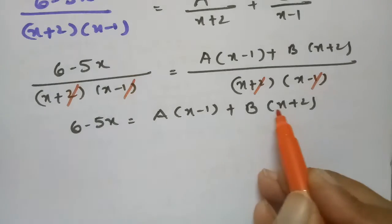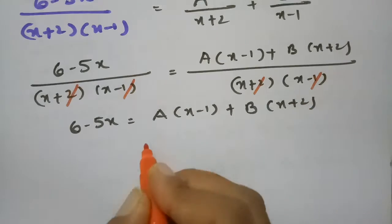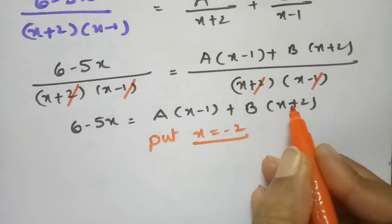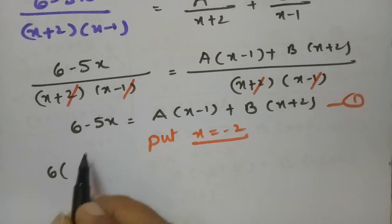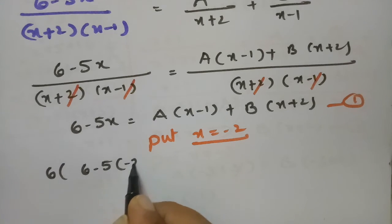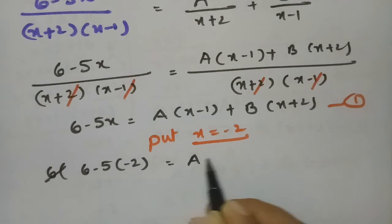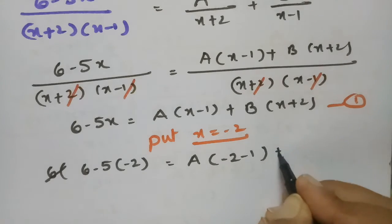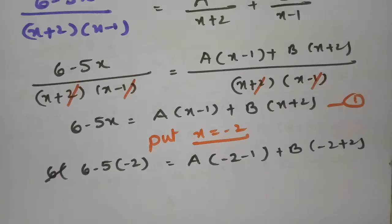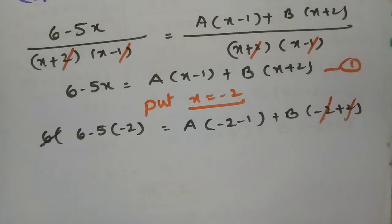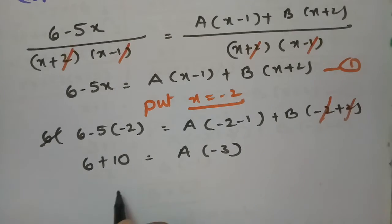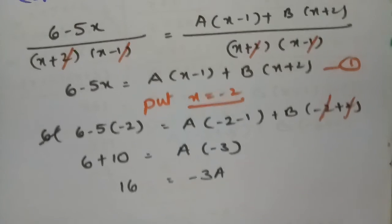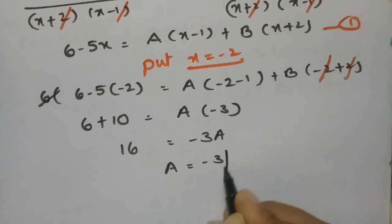To find A, I put x = -2 to make the B term zero. Substituting: 6 - 5(-2) = A(-2-1) + B(-2+2). The B term cancels, giving 6+10 = A(-3), so 16 = -3A, meaning A = -16/3.